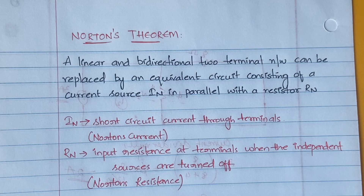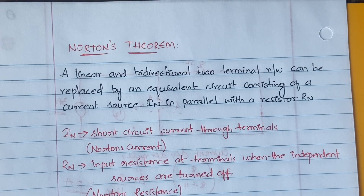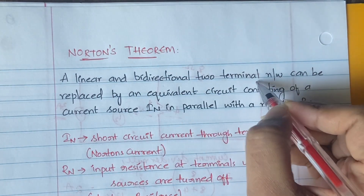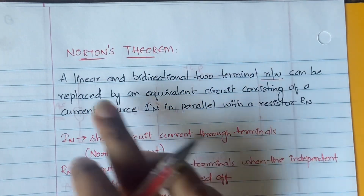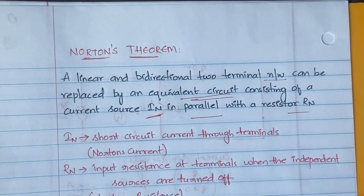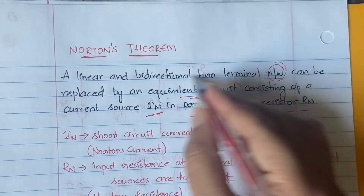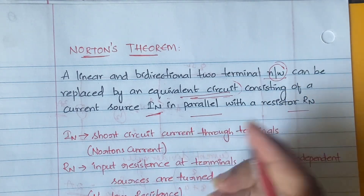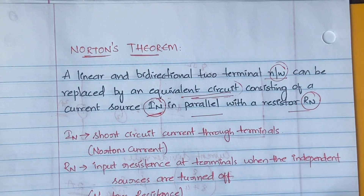Hello everyone, welcome back to my YouTube channel Trouble Free. In today's video I'm going to explain Norton's theorem. In the previous video we learned about superposition theorem, KVL, and KCL. Norton's theorem says that a linear and bidirectional two-terminal network can be replaced by an equivalent circuit consisting of a current source IN in parallel with a resistor RN.